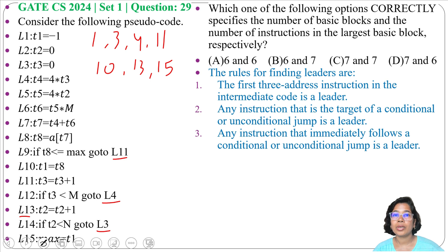We got seven leaders: 1, 3, 4, 10, 11, 13, 15. So seven leaders means there will be seven basic blocks.